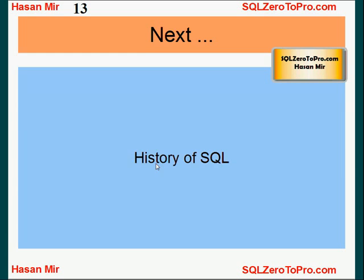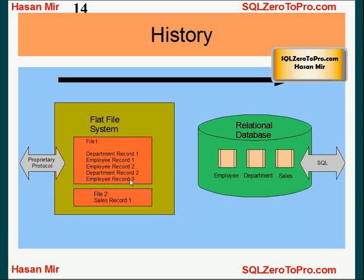Let's talk about a little bit of SQL history. We used to have flat file systems a long time ago, and some companies still use them because they perform much better and are much faster. The problem with the flat file system was there was no specific format. For example, a file might have data about departments and employees mixed together — the first line is about a department, then multiple lines represent employees within that department, then department two starts. There was no defined structure, and in order to retrieve data, you needed to have proprietary logic because you needed to know exactly how the file was storing data — whether data was stored column-wise or in a loop-wise fashion — and this logic would differ from company to company.